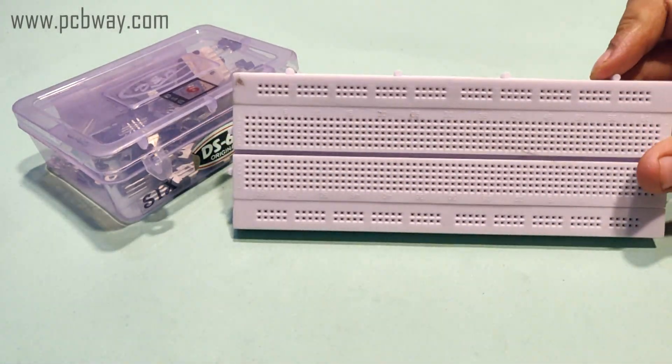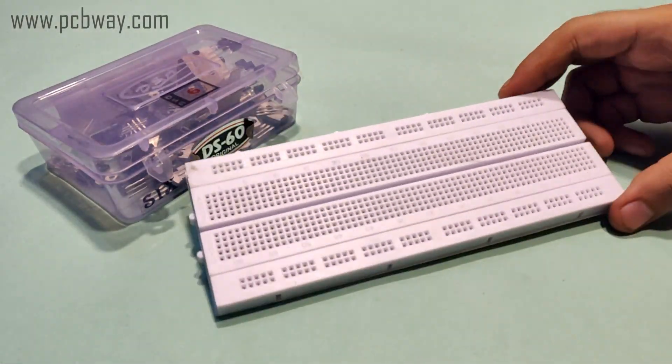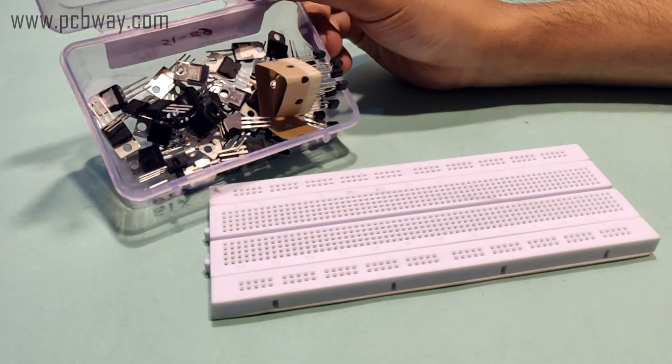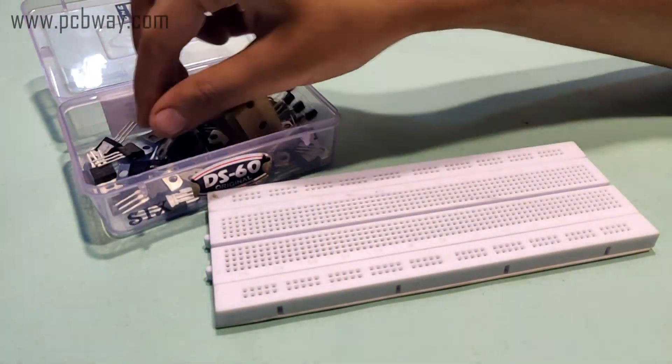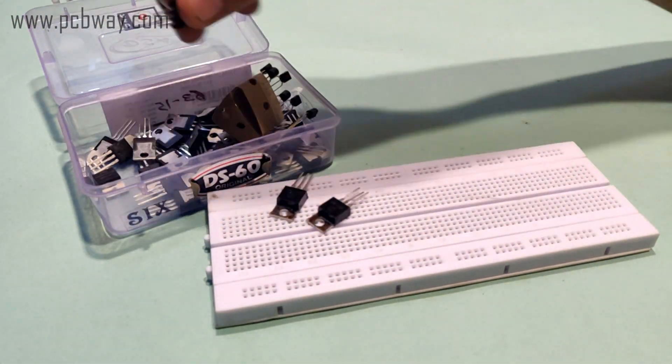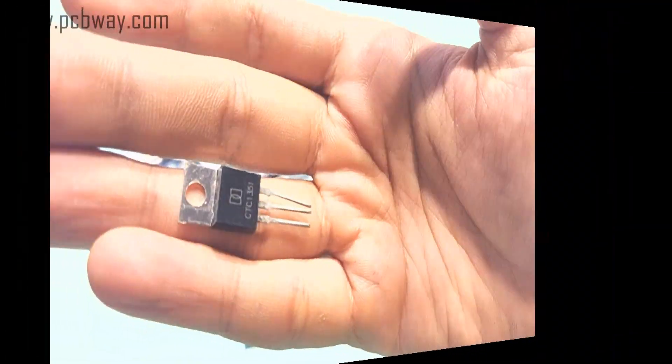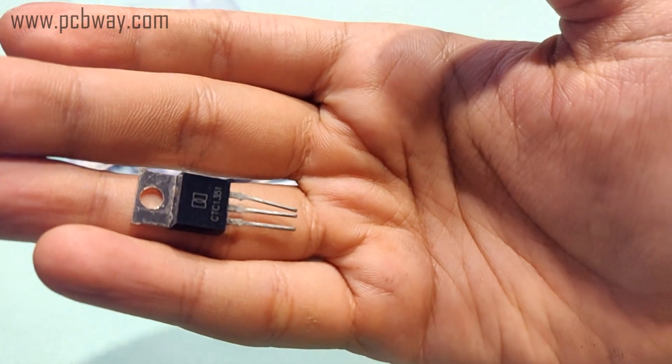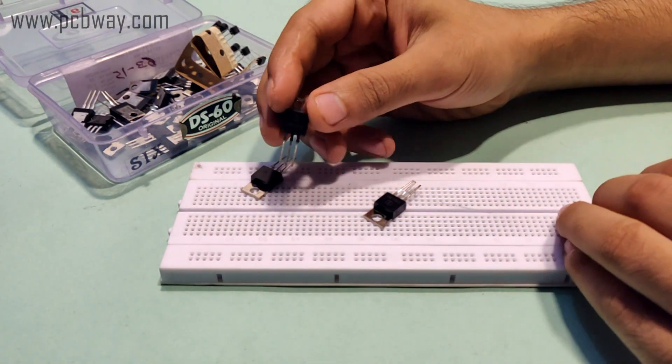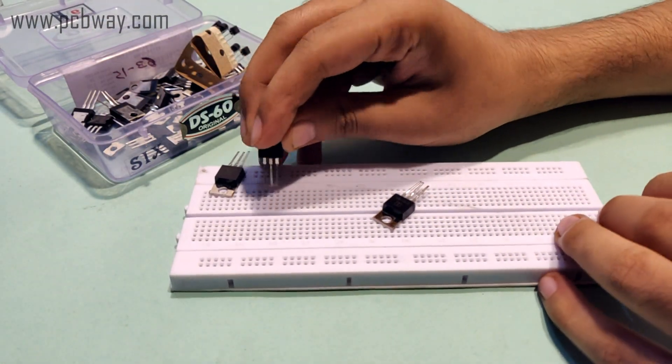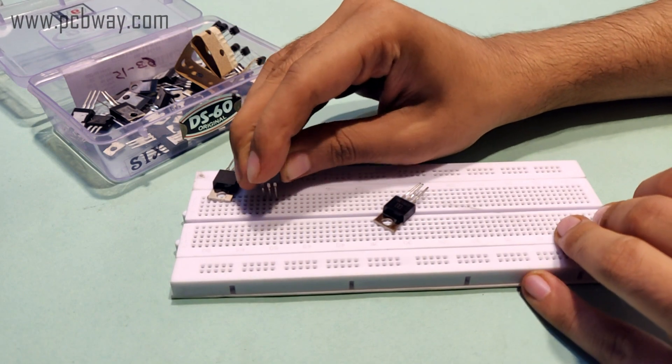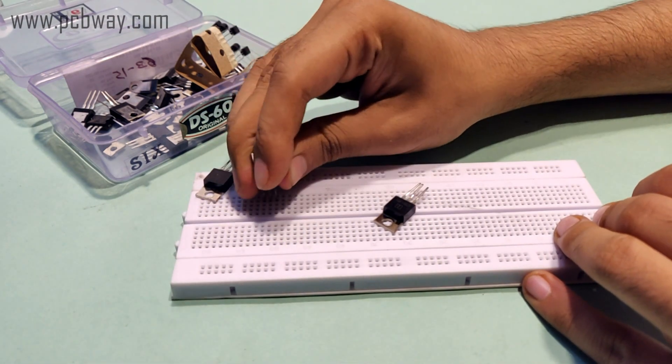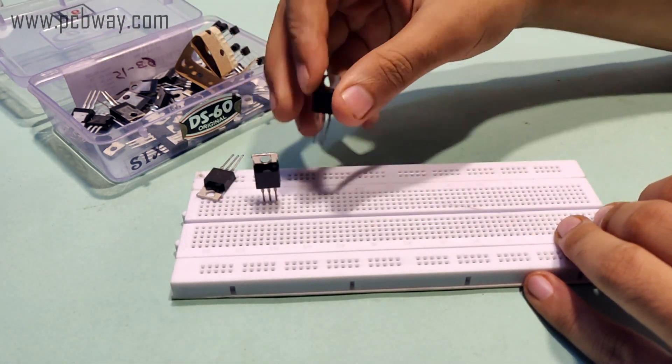Hi guys, welcome back to my channel. In this video I will teach you how to make a 12-volt DC motor speed controller. The power rating of this speed controller is going to be around 100 watts and it's the most basic type. I'm using three power transistors in parallel, CTC1351, hoping that together they will be able to handle 5 to 10 amperes of current.